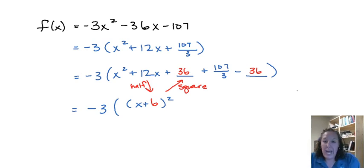We will have 108 over 3, so this is going to become 108 over 3 which is going to give us a minus 1 third.